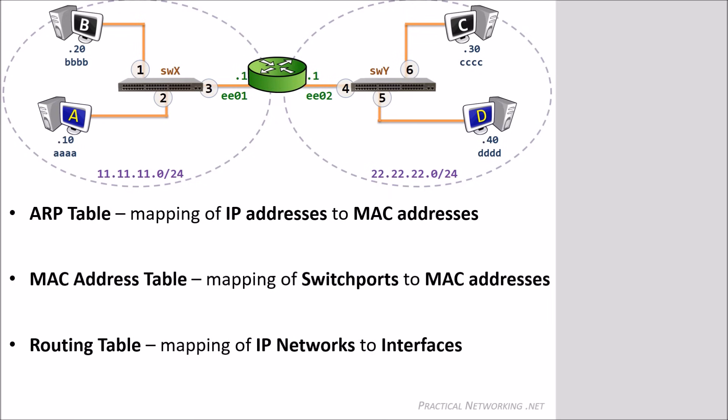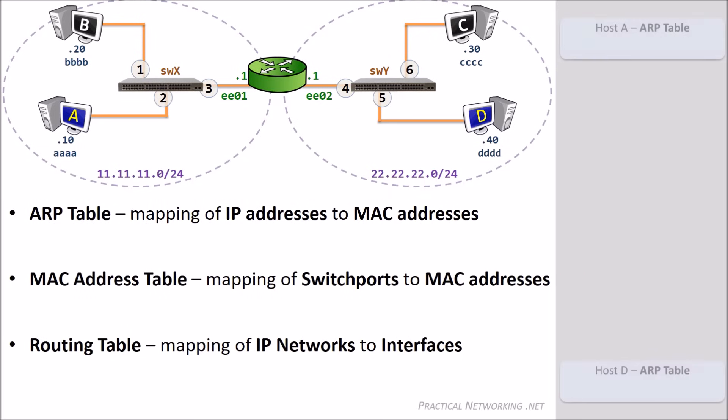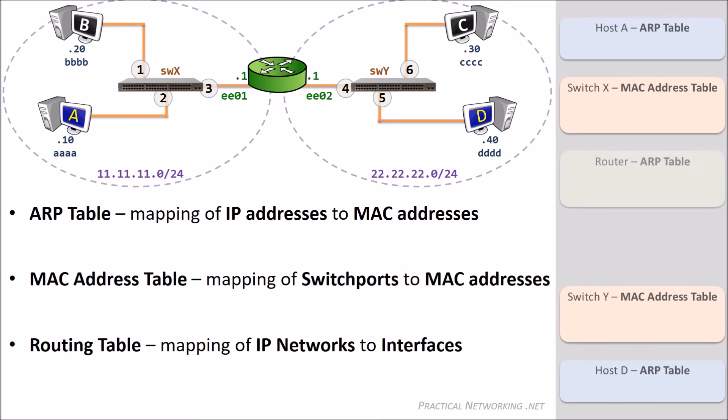Lastly, a routing table is a mapping of IP networks to egress interfaces. The routing table is a map of every network the router knows how to get to, and how to get there. Understanding how each of these tables are populated, as well as how they are used to process traffic, is critical to knowing how packets travel through a network. To illustrate this, we will look at the tables for each device in this gray area to the right. We will look at Host A's and Host D's ARP table, the switch MAC address tables, and for the router, its ARP table and routing table.